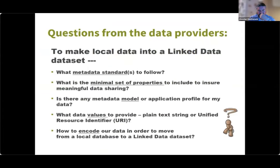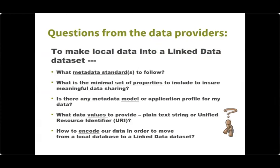In the context of producing linked open data and particularly bibliographic data, data and service providers are likely to have many specific questions related to encoding strategies. For example: what metadata standards should be followed to publish bibliographic data as linked data? What is the minimal set of properties that a bibliographic dataset should include to ensure meaningful data sharing? Is there any metadata model or application profile that can be directly adopted for producing bibliographic data, especially from a local database? If the controlled vocabulary used is available as linked data, what kind of values should be exchanged — the literal form representing a concept, or the URI identifying the concept?